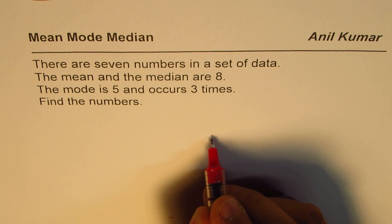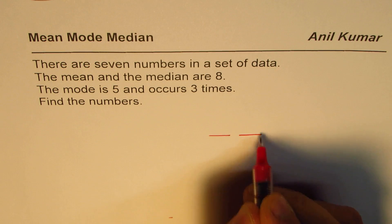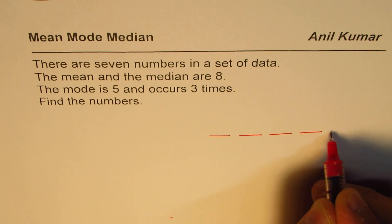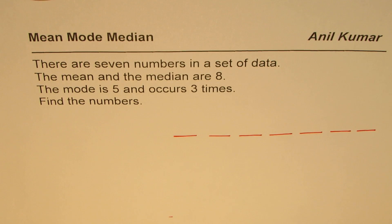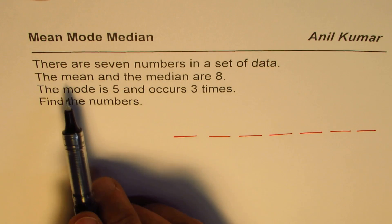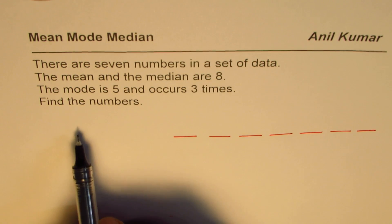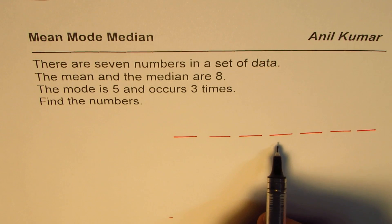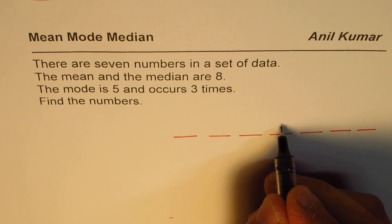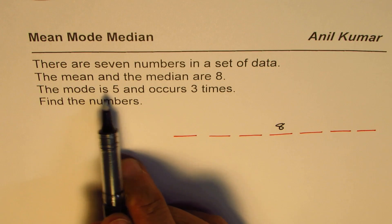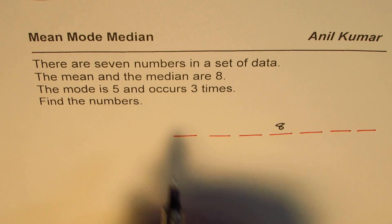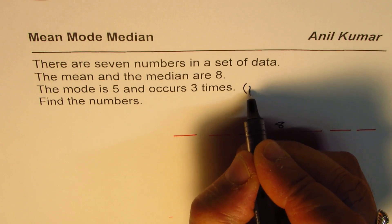We are given seven numbers, so let me make seven places: one, two, three, four, five, six, seven. These are the seven numbers. Now, the mean and median are eight, so the center value is eight, meaning the fourth position should be eight. We are also given that the mode is five — mode is the most frequent value.